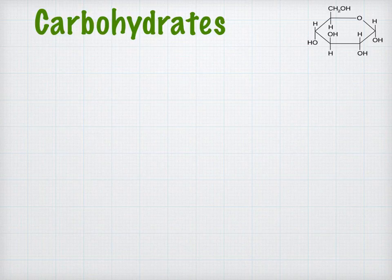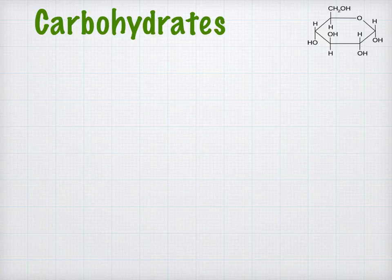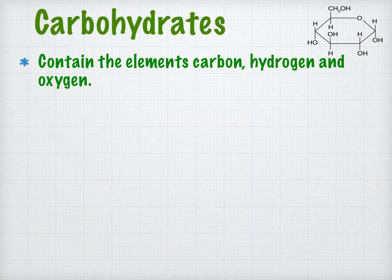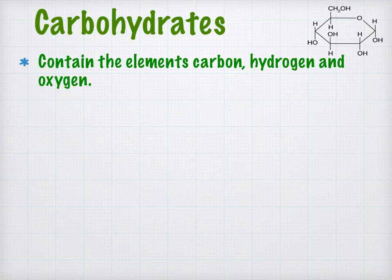First of all we'll have a more in-depth look at carbohydrates. The diagram shows a monosaccharide of glucose — that's a single carbohydrate molecule, one of the monomers which can join up to make polymers. Carbohydrates get their name because they contain the elements carbon, hydrogen and oxygen. There's generally a 2 to 1 ratio of hydrogen to oxygen like there is in water — for instance glucose is C6H12O6.